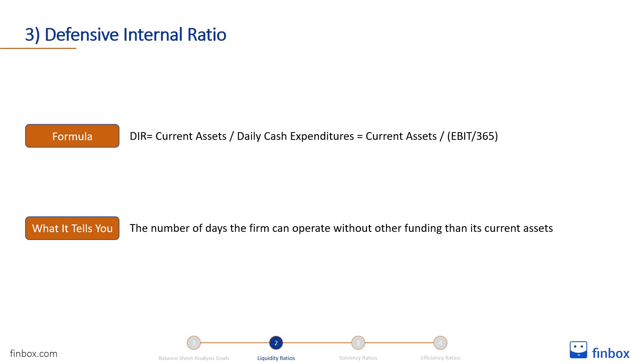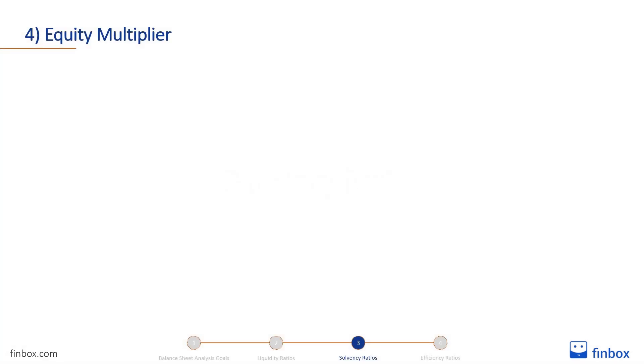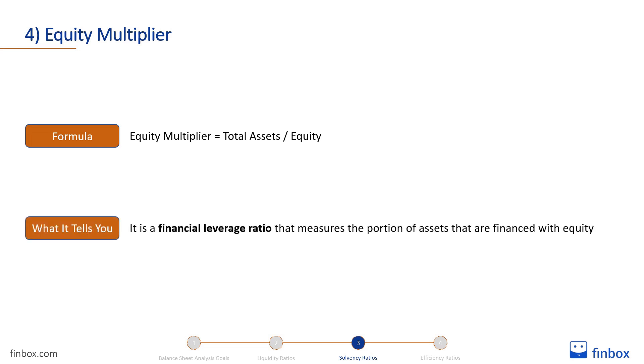Now let's move on to solvency analysis. Solvency analysis helps you evaluate the ability of a company to pay its long-term debt and the interest on that debt. A financially strong company has enough liquidity to pay its short-term obligations and, at the same time, must manage its capital structure appropriately. The first metric on the list is the equity multiplier. It is equal to total assets divided by equity. It is a financial leverage ratio that measures the portion of assets that are financed by equity. An equity multiplier ratio that is too high compared to other companies in the industry may indicate that management is being too aggressive in running the business.